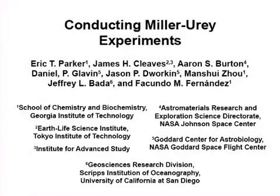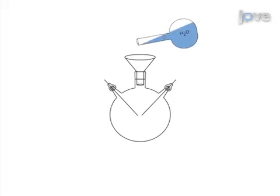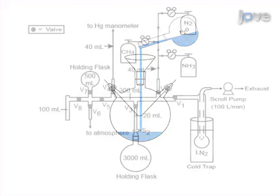The overall goal of the following experiment is to conduct a Miller-Urey spark discharge experiment. This is achieved by placing water into a reaction flask to represent the early Earth's oceans.